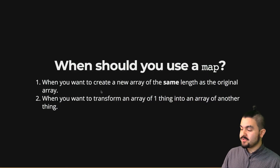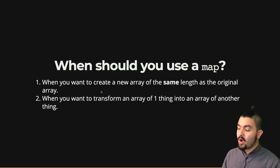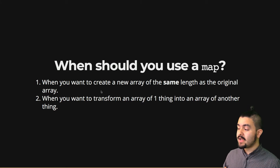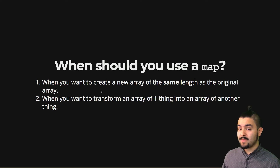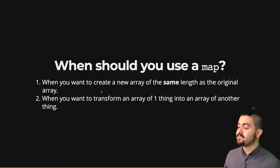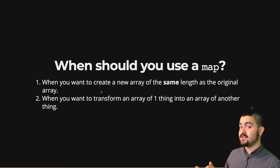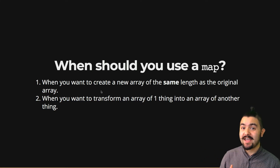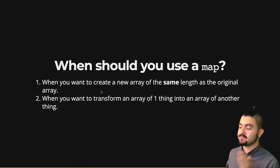When should you use map? When you want to create a new array of the same length as the original array. A lot of times when you see map, you see people talking about filter and reduce and other higher-order methods, but specifically map will create a new array of the exact same length. So if you know you need a new array of the same length, you should use map. The other thing is: when you want to transform an array of one thing into an array of another thing — in our simple case, we took an array of numbers and turned that into an array of doubled numbers.